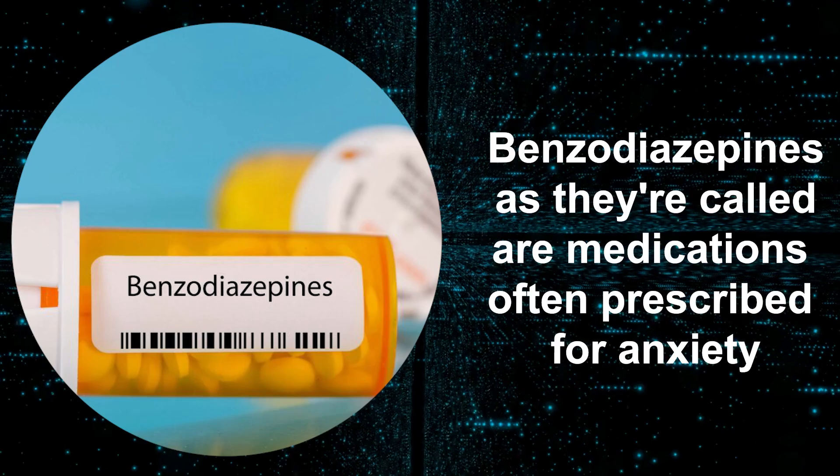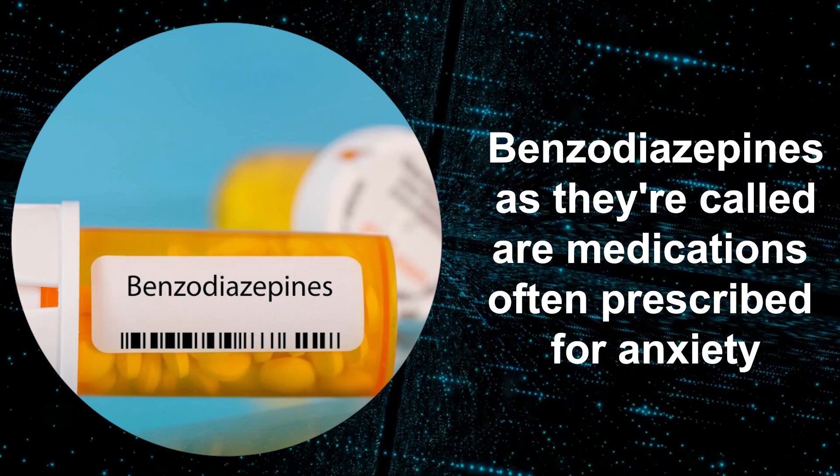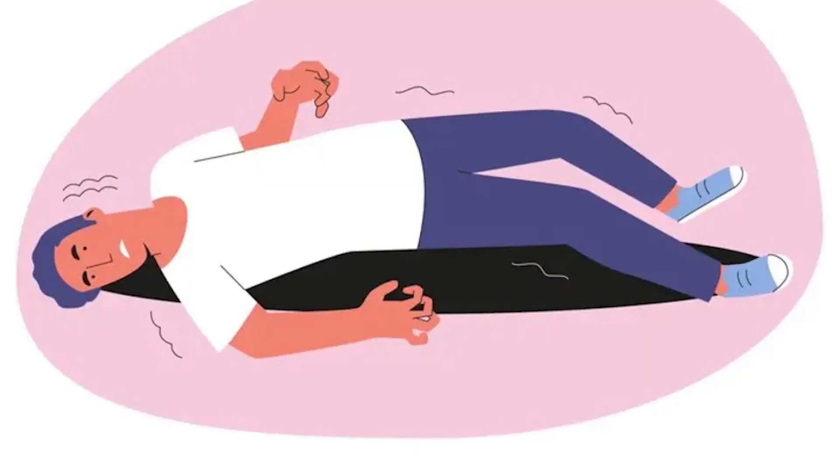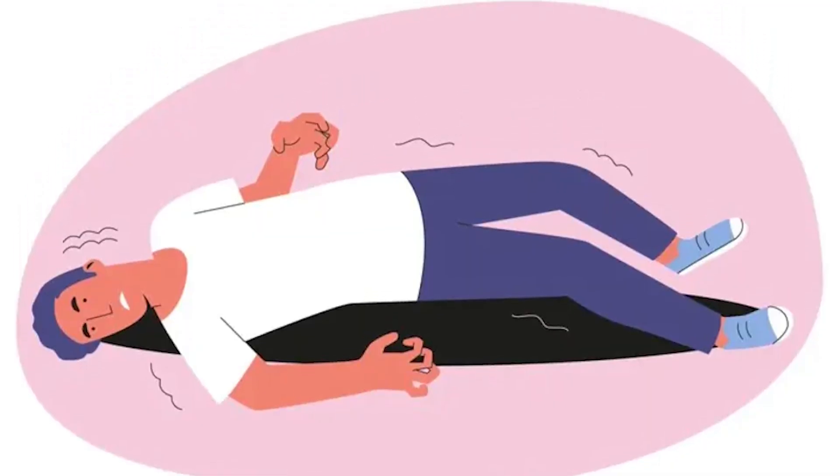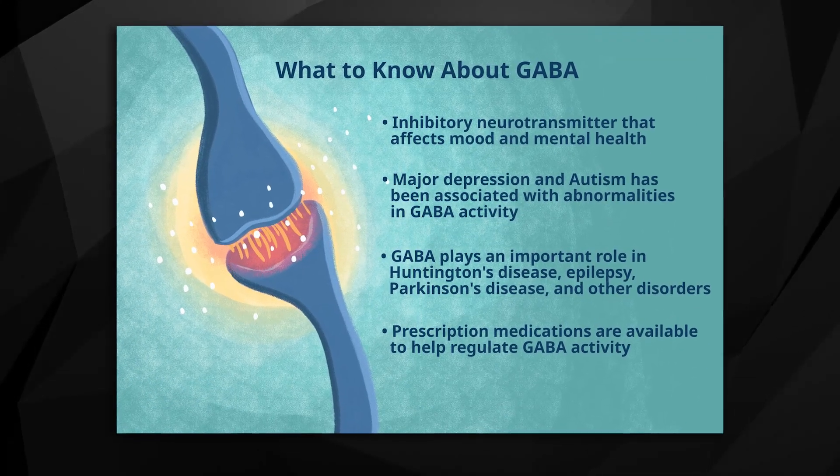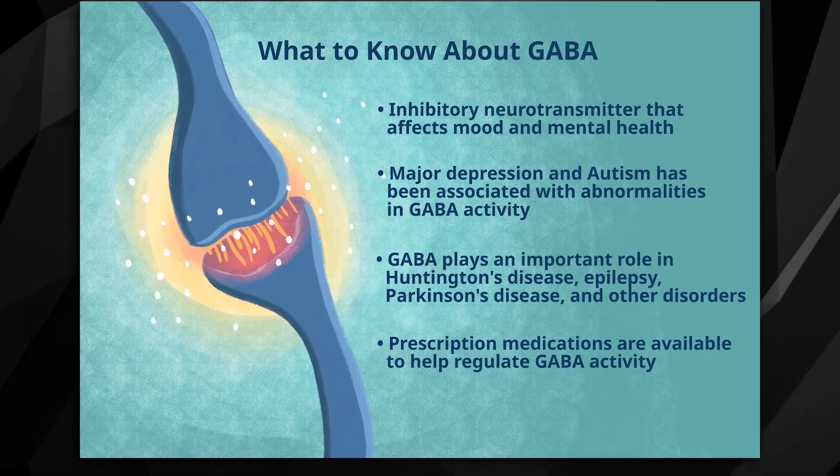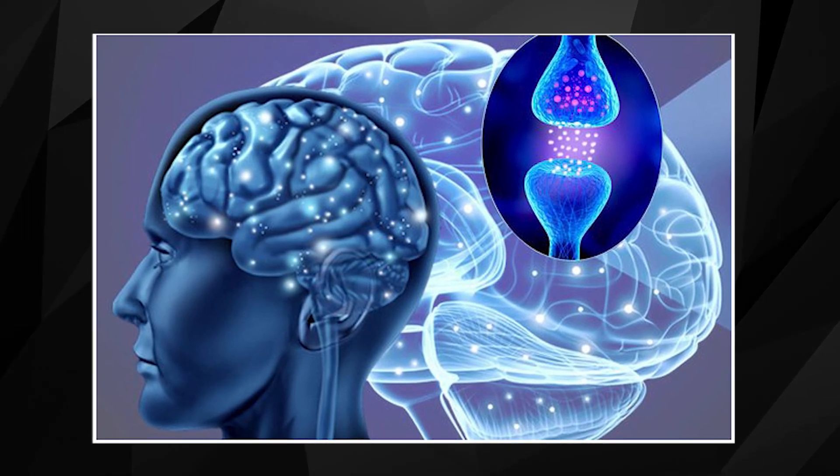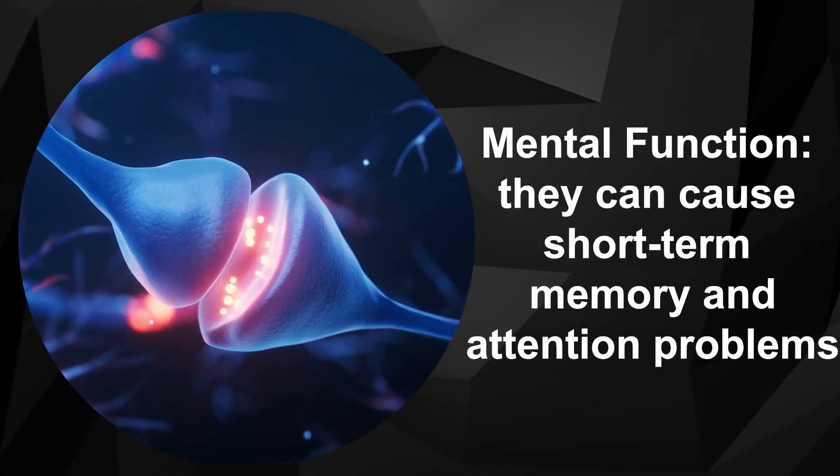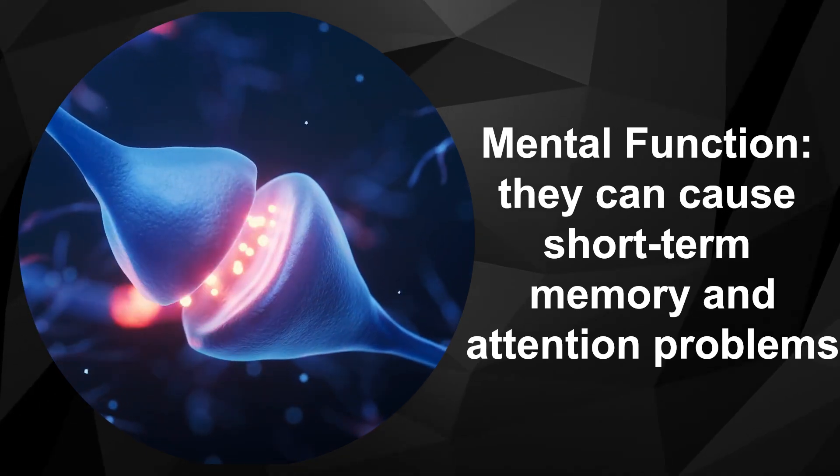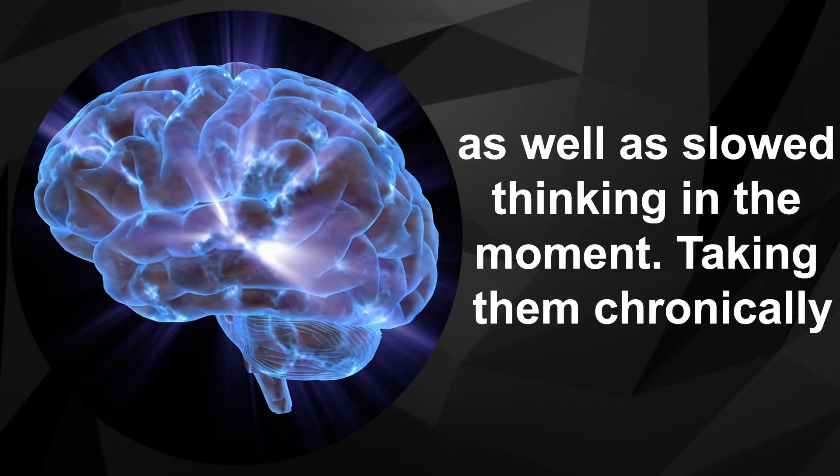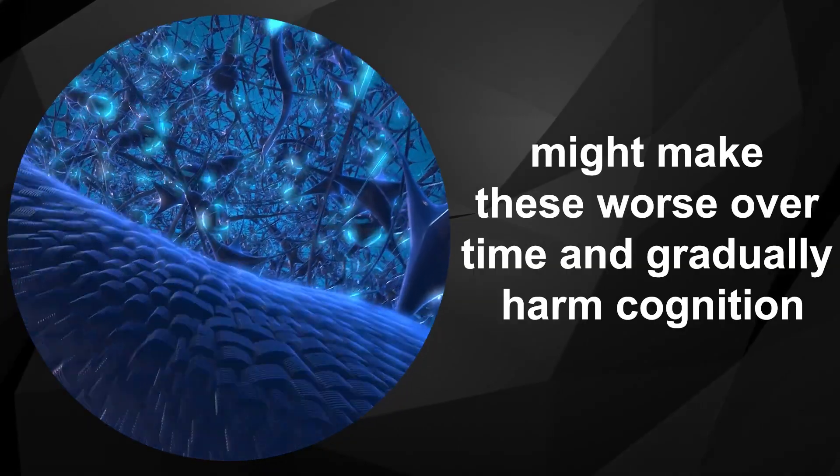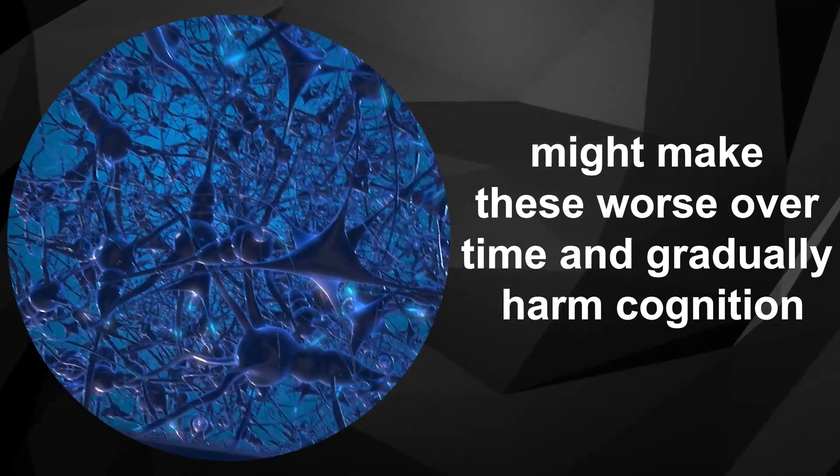Four, benzodiazepines. Benzodiazepines, as they're called, are medications often prescribed for anxiety, sleep troubles, seizures, and muscle issues. They work by boosting the effects of GABA, a brain chemical that has a calming effect. There may be a connection between using them long-term and dementia. Mental function: they can cause short-term memory and attention problems as well as slowed thinking in the moment. Taking them chronically might make these worse over time and gradually harm cognition.